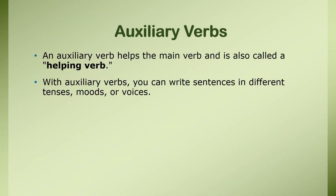Auxiliary verb — it helps the main verb. When we form any sentence, its role is to help the main verb. This is why we also call it a helping verb. Sometimes it acts like the main verb, but sometimes when another verb is present, the main verb takes that role and it becomes the helping verb. Normally, the auxiliary verb's function is to help the main verb.